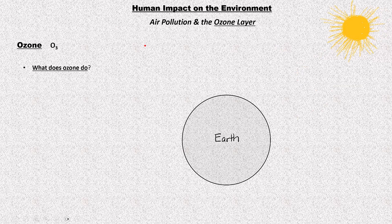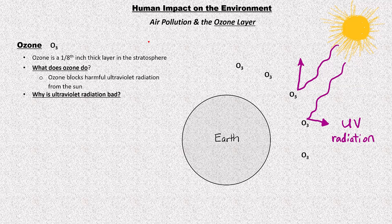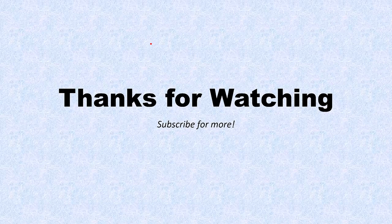Lastly, ozone — O3 — is a one-eighth inch thick layer in the stratosphere that blocks UV radiation from the sun. This is separate from global climate change; it's about protecting us from harmful UV radiation. UV radiation causes mutations and possibly cancer, so holes in the ozone layer allow more UV radiation through, causing higher instances of cancer and DNA mutations. Thank you for watching. Subscribe for more.